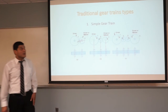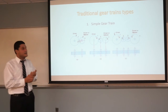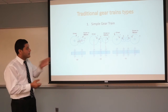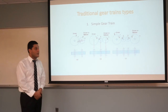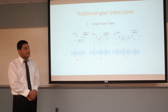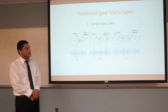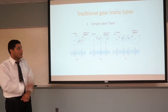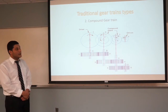Now let me talk about traditional gear trains. The simplest and easiest one is the simple gear train — it is very linear. Every shaft has a maximum of one gear, and the intermediate gears are used only to change the direction of motion from the input to the output.